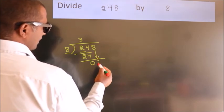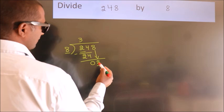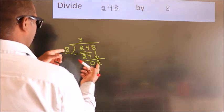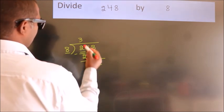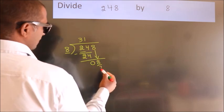So, 8 down. When do we get 8? In the 8 table, 8 once is 8.